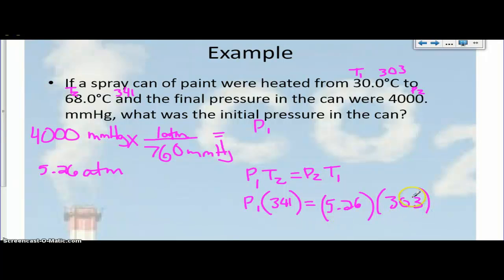And our temperature 1 was 303. Alright, now we're going to multiply right here. You get 1593.78, and that's equal to P1 times 341, divide by 341 on both sides, cancels.